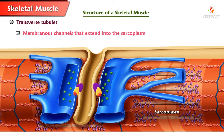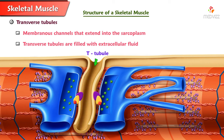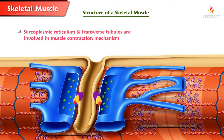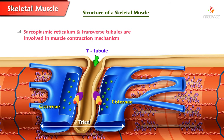Transverse tubules are a set of membranous channels that extend into the sarcoplasm as invaginations continuous with the muscle cell membrane, the sarcolemma. They are filled with extracellular fluid and extend deep into the cell. Each transverse tubule runs between two enlarged portions of sarcoplasmic reticulum called cisternae, forming a triad near the region where actin and myosin overlap. Sarcoplasmic reticulum and transverse tubules are involved in activating the muscle contraction mechanism; because one transverse tubule is associated with two sarcoplasmic reticulum, they are termed the triad.